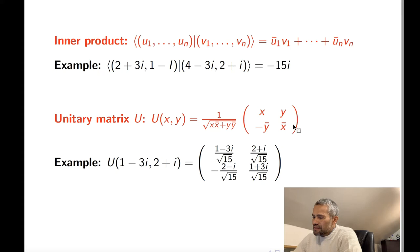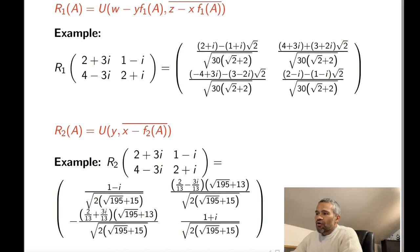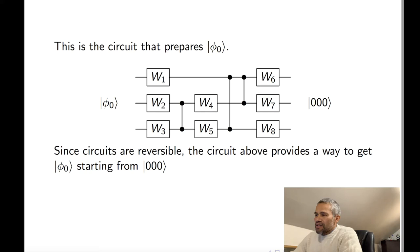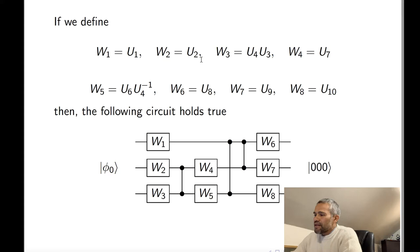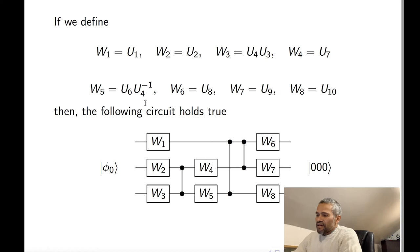Now that we have these four unitary matrices, we are going to define our local gates W1, W2, W3, and so on. Instead of defining W1 up to W8 directly, we are going to define 10 matrices U1, U2, U3 up to U10. The relation between the U's and the W's is simple: U1 is W1, U2 is W2, W3 is U4 times U3, and so on. We are going to be defining U1 through U10 instead of W1 through W8, but with the U's we can define the W's so that the circuit holds true.